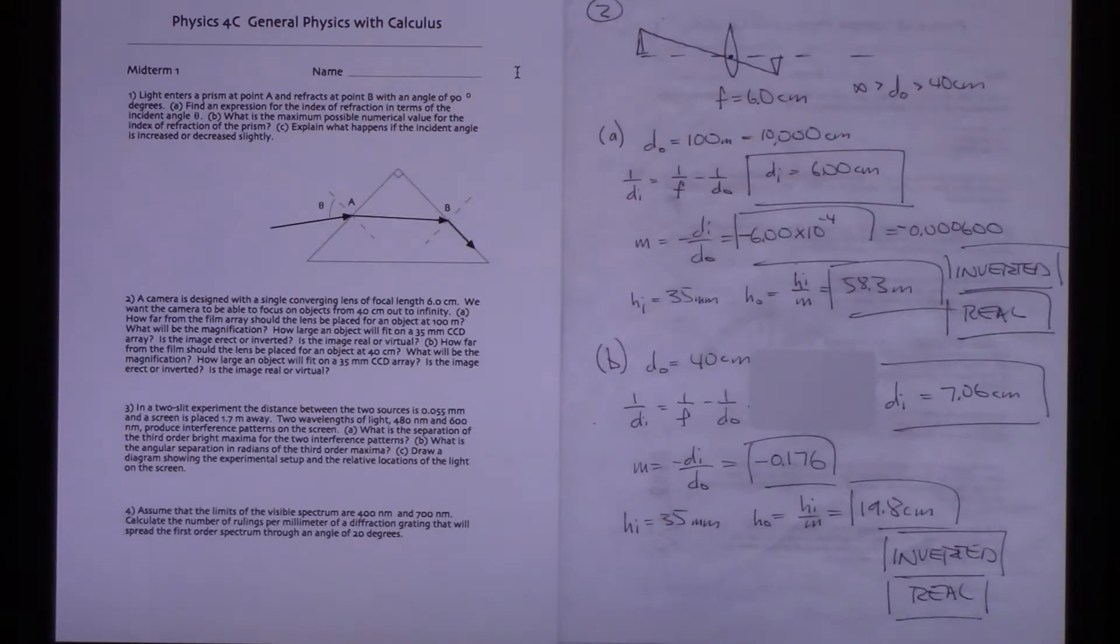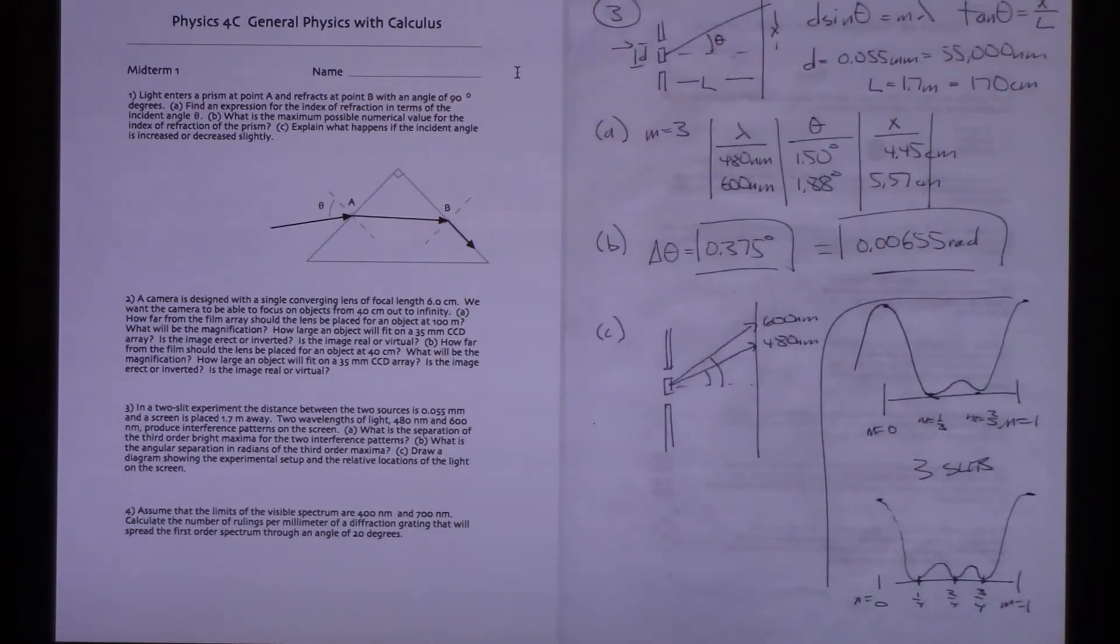Once again, it's going to be inverted and it's going to be real. They didn't ask for a ray diagram here, but I feel like they should have asked for a ray diagram of what's going on. This is probably pretty straightforward. This seems easier than the lens problem we had on the flip side of this practice set.